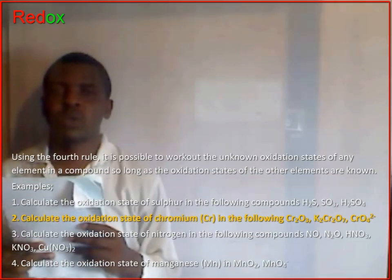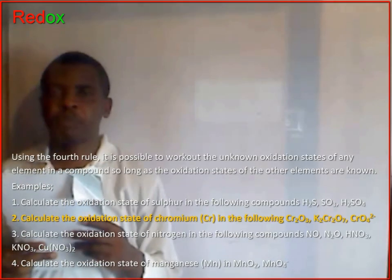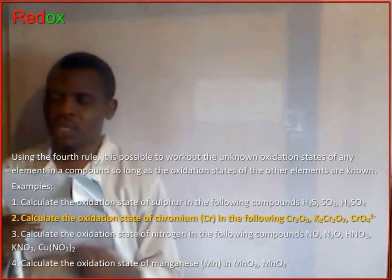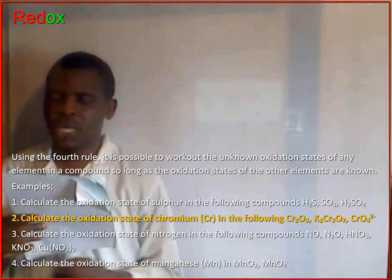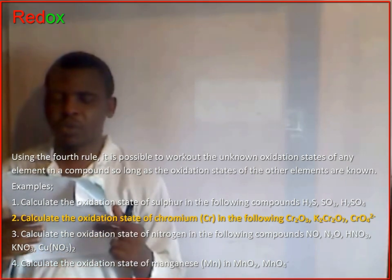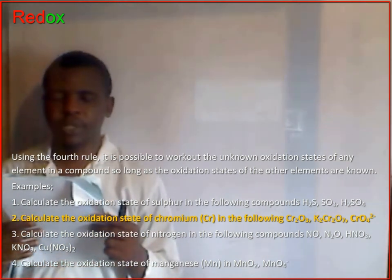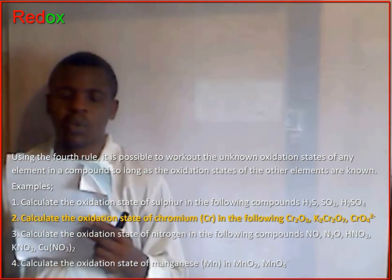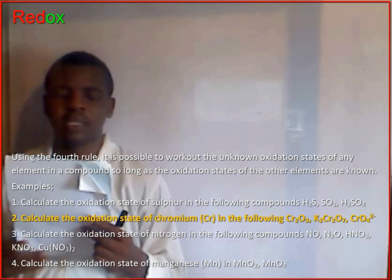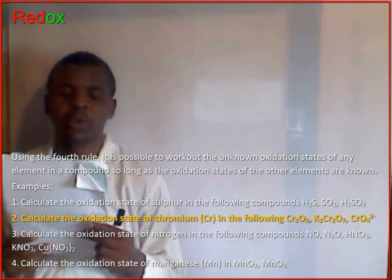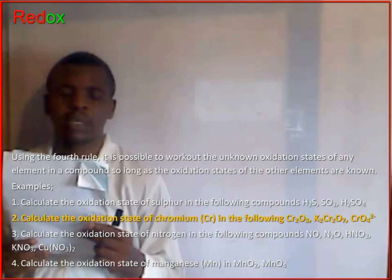Take out a piece of paper and calculate the oxidation state of chromium in the following: chromium oxide, potassium dichromate, and chromate ion.